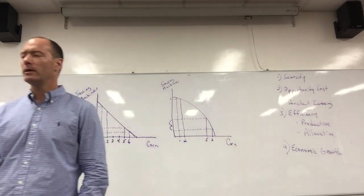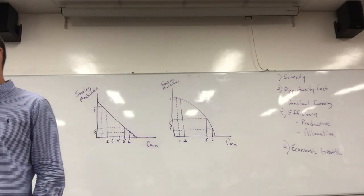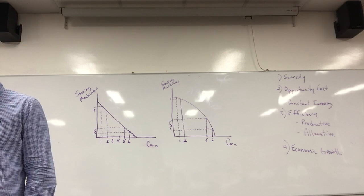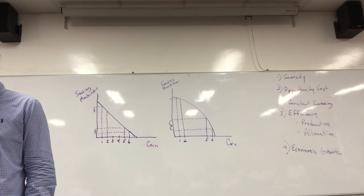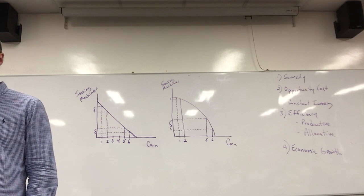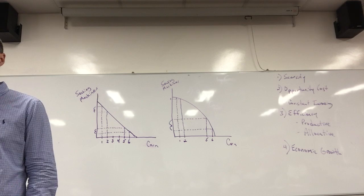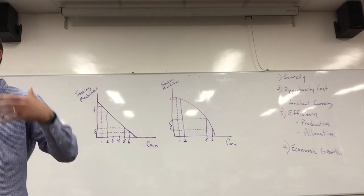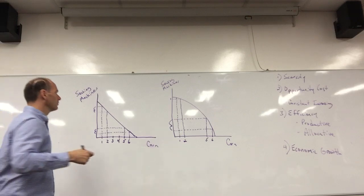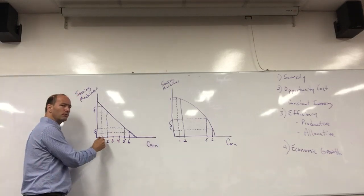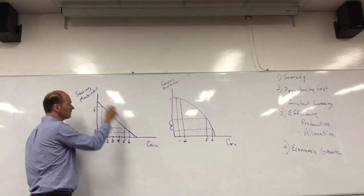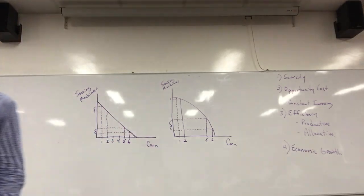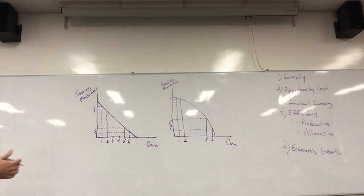Economic models are meant to simplify the real world, the same way physicists study gravity in a vacuum — it simplifies the real world and removes a lot of variables. So do we. In production possibilities, we imagine a world of two goods. The two goods I've chosen are sewing machines and corn.